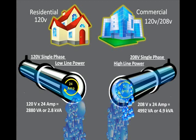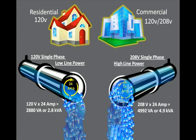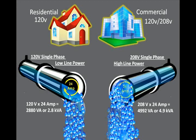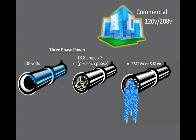Data center power can also be distributed with 208-volt single-phase high-line power. In this example, 208 volts are pushed through 24 amps, providing 4,992 volt-amps or 4.9 kVA. Pushing higher volts is more energy efficient and delivers more power over the same size line, which means this is generally a better solution. In addition to single-phase 208 volts, data center power can also be distributed with three-phase power. You can consider it to be a modified group of three power lines. In this example, 208 volts are pushed through 13.8 amps times 3, which provides 8,611 volt-amps or 8.6 kVA. The use of three-phase power is becoming widespread due to its efficiency and power delivery.